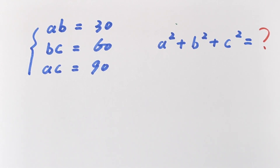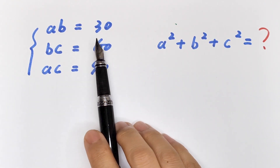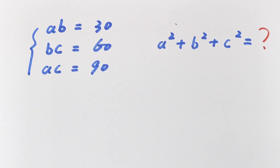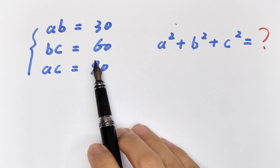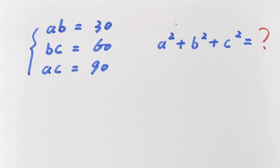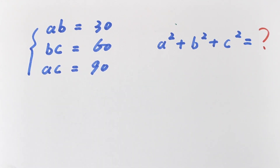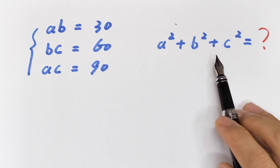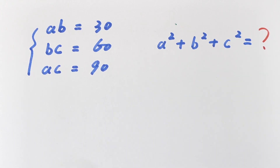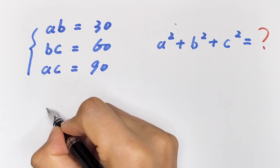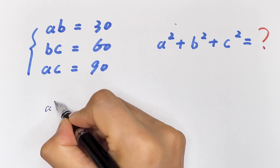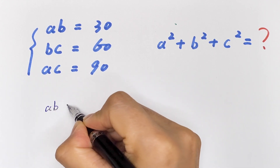Hello everyone. How to solve: a·b is equal to 30, b·c is equal to 60, a·c is equal to 90 — then what is a² plus b² plus c²? Step 1: from a·b = 30, b·c = 60, a·c = 90...